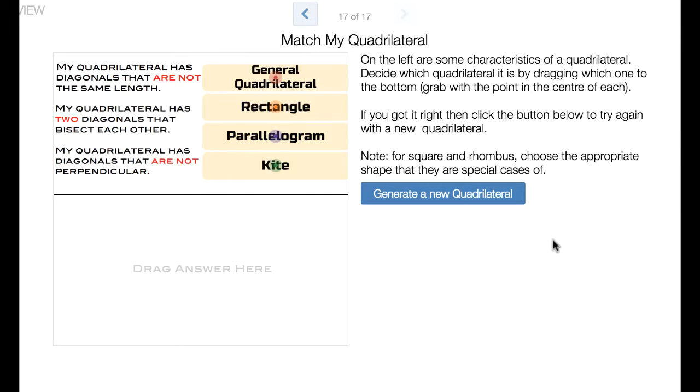At the end, there is a test their skills sort of thing. They can take their characteristics and see if they're correct. In this case, my quadrilateral has diagonals that are not the same length. They have two diagonals that bisect each other and they have diagonals that are not perpendicular. We're asked to figure out what type of quadrilateral that is. Hopefully they'll figure out that's a parallelogram. If they do, it gets success.